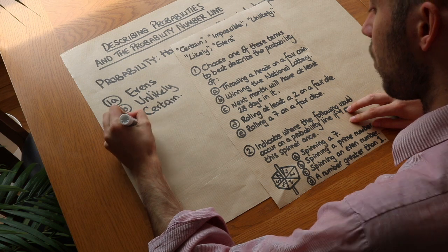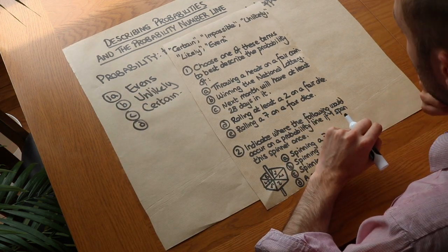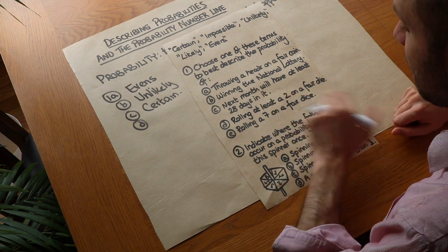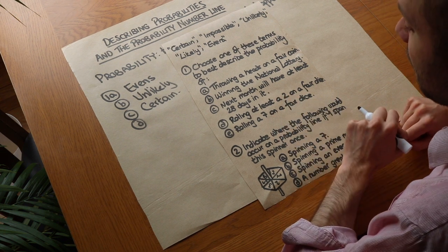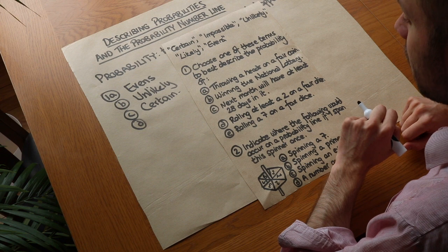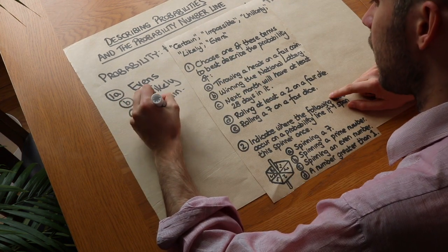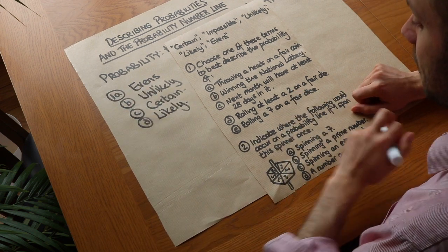What about D? Rolling at least a 2 on a fair dice. Well on a fair dice we have 1, 2, 3, 4, 5, 6. Now all the numbers on a dice, except for 1, would be at least 2. So that's every outcome except for throwing a 1. So that's quite likely, isn't it? We'd say that was likely. But not certain because we might throw a 1 and that's not at least 2, is it?